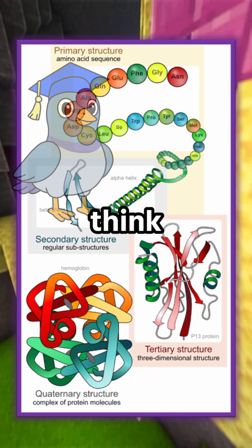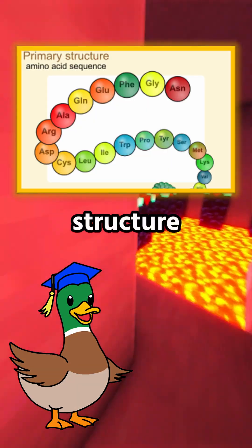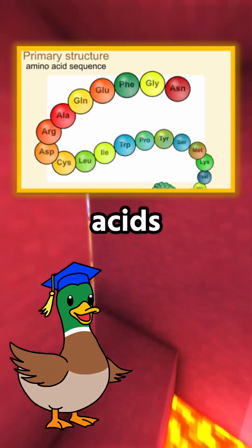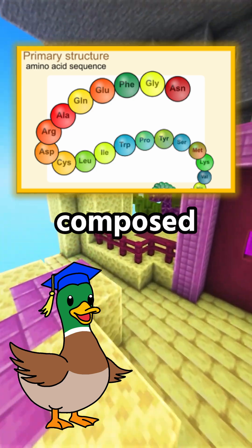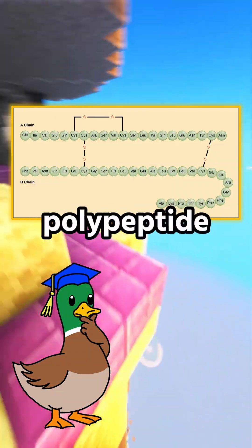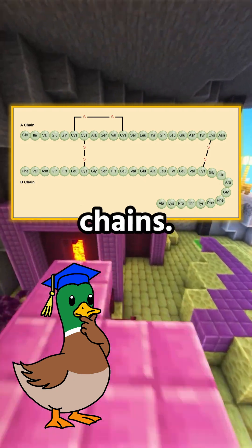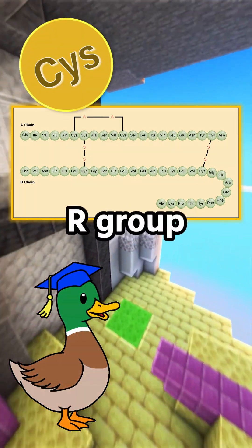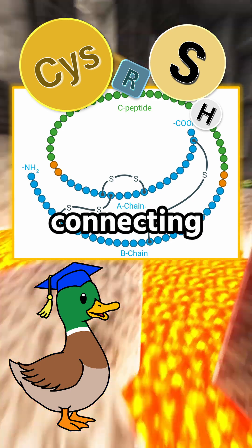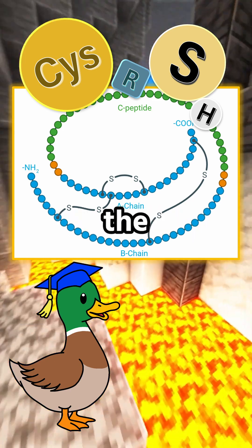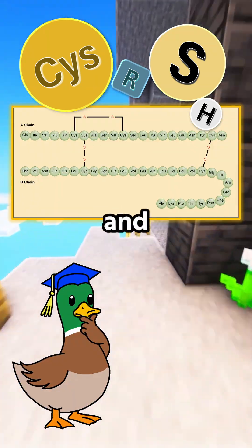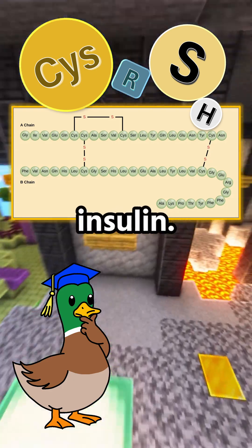I mean, just when you think it's gonna be easy. The primary structure of a protein is the unique sequence of amino acids that the polypeptide chain is composed of. The hormone insulin, a protein, consists of two polypeptide chains. The amino acid cysteine's R group, sulfhydryl, forms disulfide bonds, connecting and shaping the pair of polypeptides. Note that the sequence of amino acids in chains A and B are unique to insulin.